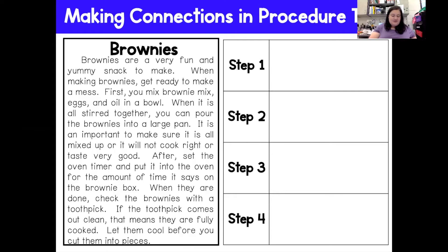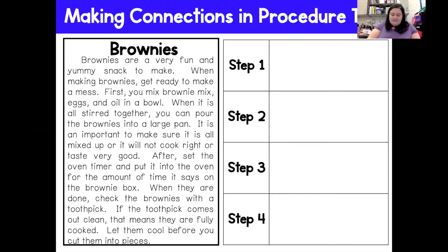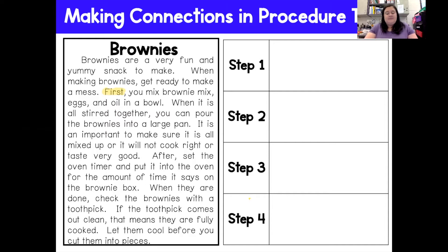Now that I've read the story, I'm going to go through it and decide what are the steps of the procedure. What's step one? Step two? Step three? And step four? I'm going to take out my highlighter and highlight some key words. For example, the word 'first' right here — that's going to help me identify step one and tells me the starting point of where my steps begin. So it says first, you will mix brownie mix, eggs, and oil into the bowl. When it is all stirred together, you can pour the brownies into a large pan. So the first step is to mix all of the ingredients together, and then pour the brownies into a large pan.